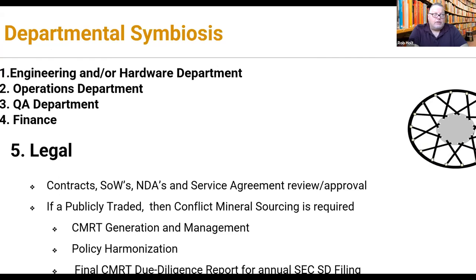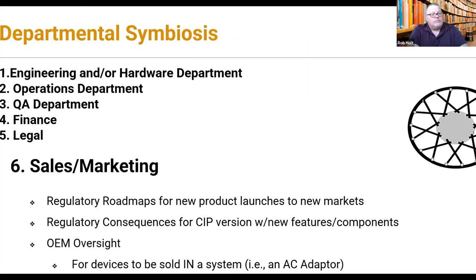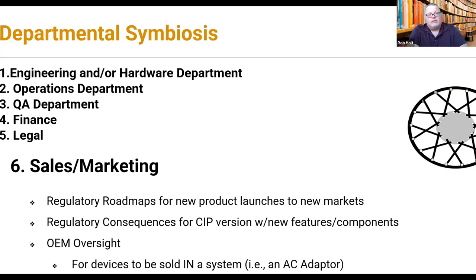Sometimes logistics will be housed in operations, and many trade issues come out of operations — so the regulatory compliance person will need to know about HS codes. In the QA department, disciplines like RoHS and REACH — substances of high concern — are typically operated out of QA. Labels also come out of QA, along with document approval processes, doc control and archiving, quality management systems, SSOPs, and CAPAs. The regulatory point person will be assisting with all of these.